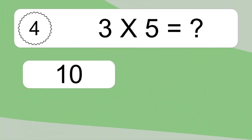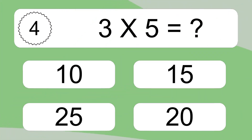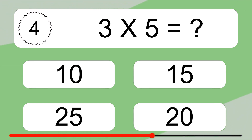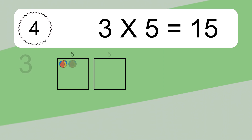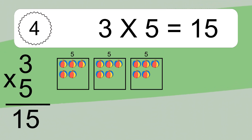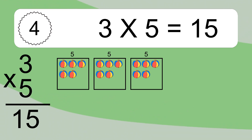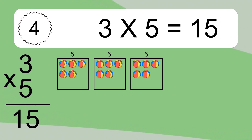3 times 5 equals what? 3 times 5 equals 15. We have 3 boxes and each box has 5 colorful balls inside. If you count all the balls in all the boxes together, you will have 3 times 5 balls. This equals 15 balls.